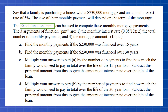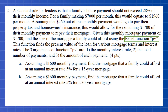The first part involves a family purchasing a house with a $230,000 mortgage at an annual interest rate of five percent. Their monthly payment depends on how quickly they plan to pay it back. Use the Excel PMT function to calculate the monthly payment for a 15-year mortgage and a 30-year mortgage, and then calculate the total amount of interest paid in each case.